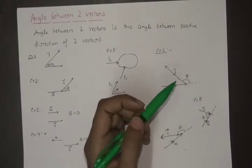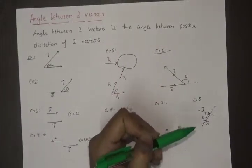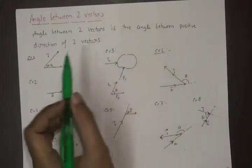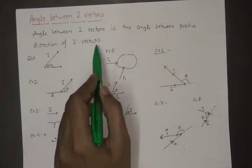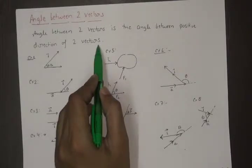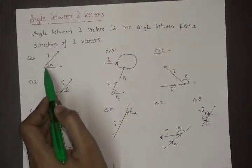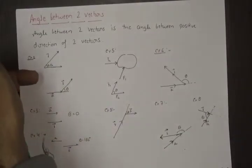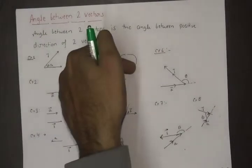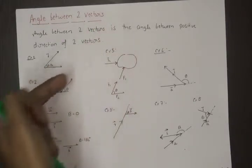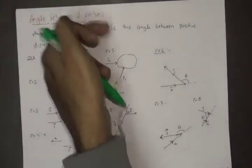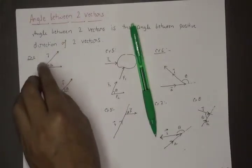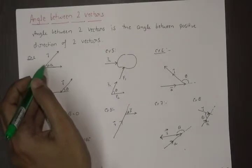How do we define the angle between two vectors? The angle between two vectors is the angle between the positive directions of the two vectors. Remember this. For example, this is the first vector. The positive direction of A is in this direction, and the positive direction of B is in this direction. The angle between the positive directions of the two is equal to θ. Thus, the angle between A and B is θ.